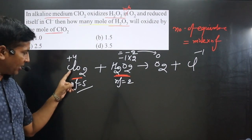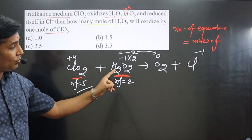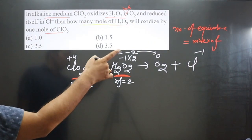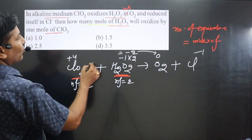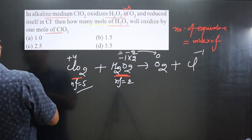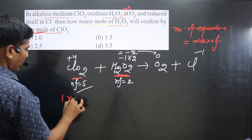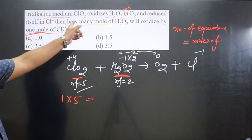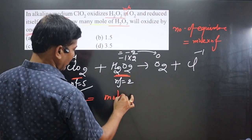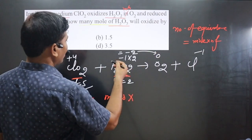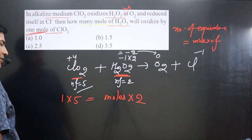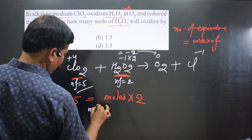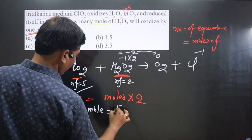Now: number of equivalents of ClO₂ = number of equivalents of H₂O₂. The formula is moles × n-factor. Moles of ClO₂ = 1 (given), so: 1 × 5 = moles of H₂O₂ × 2. Solving, moles of H₂O₂ = 5/2 = 2.5.